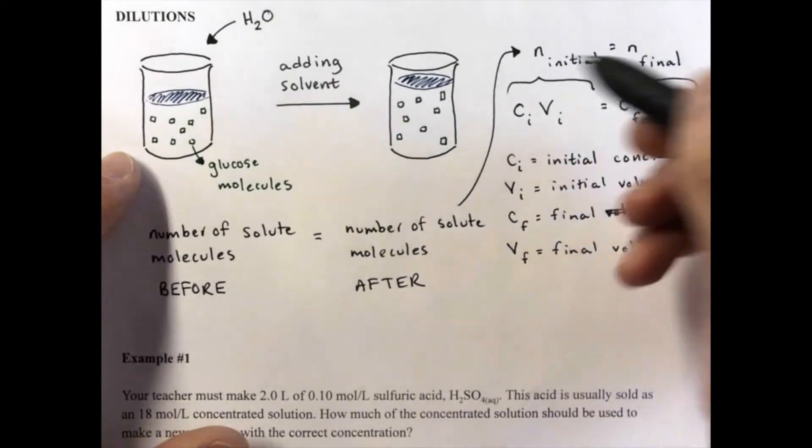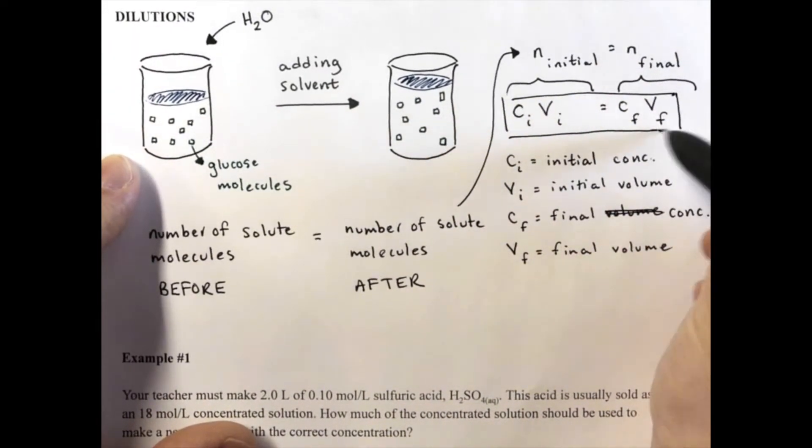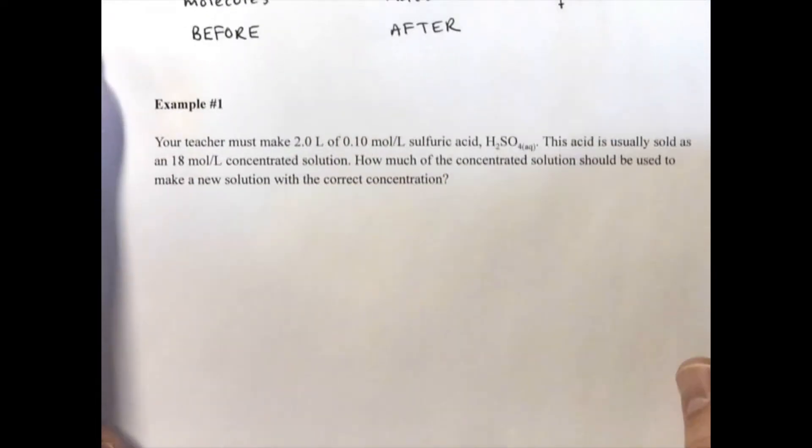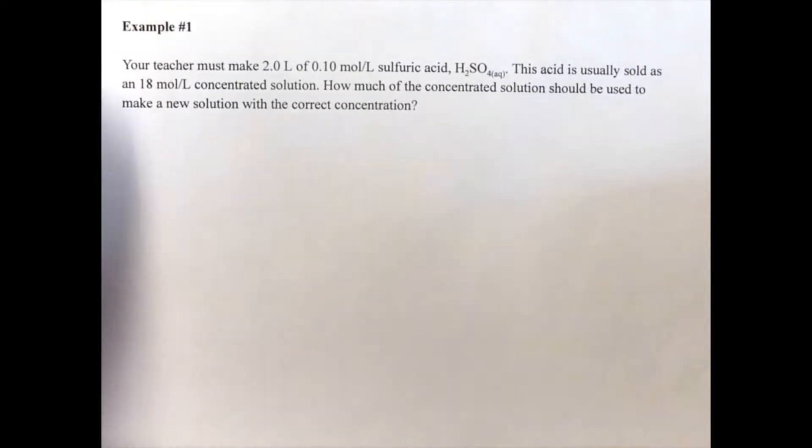So there we have it. This equation here is what we're going to use for calculations involving dilutions. So if we want to know the concentration of a solution before or after a dilution, we can use this one right here. So let's go ahead and do an example. This states here that let's say you've got two liters - we have to make two liters of a 0.1 molar sulfuric acid solution. This acid is usually sold as an 18 molar concentrated solution. How much of the concentrated solution should be used to make a new solution with the correct concentration?